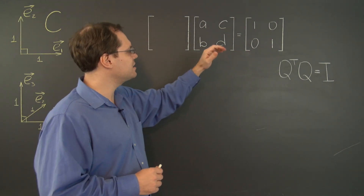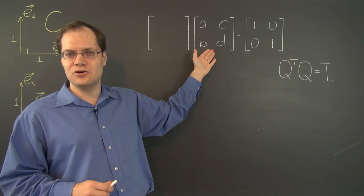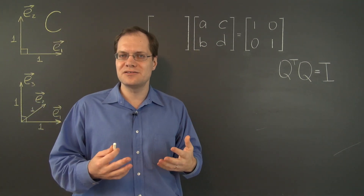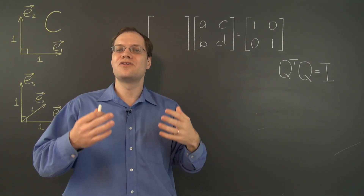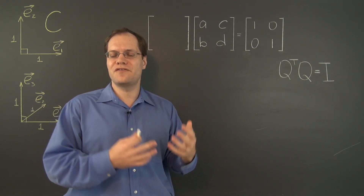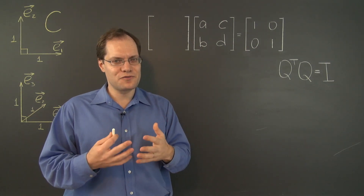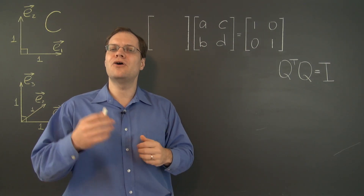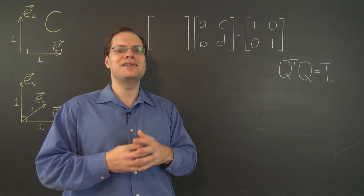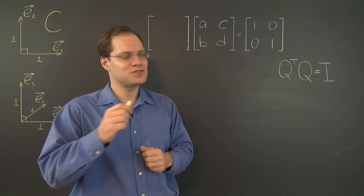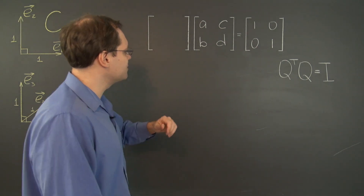You will see that we have 4 unknowns and 3 equations — 3 equations with 4 unknowns — giving us a little bit of freedom, but only basically 1 degree of freedom. So let's see what happens.